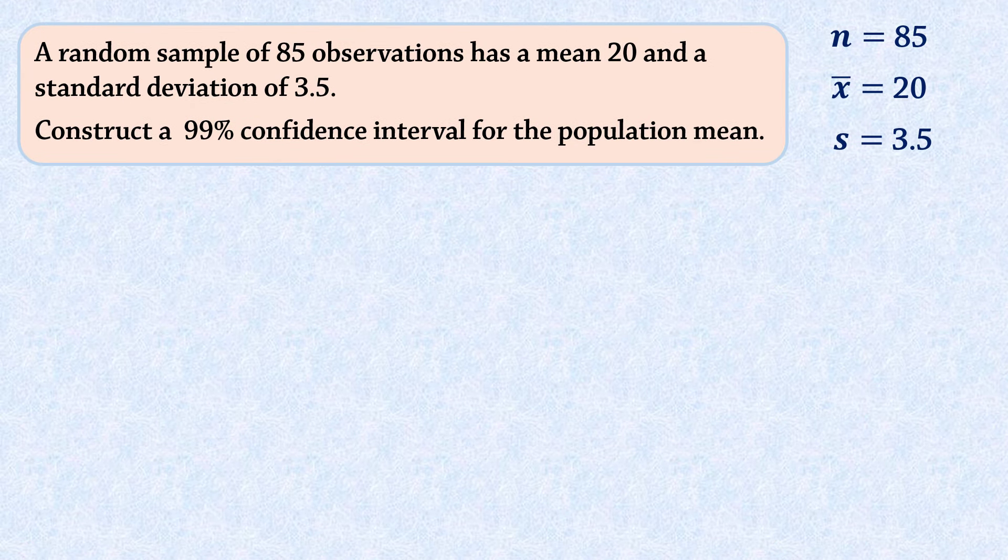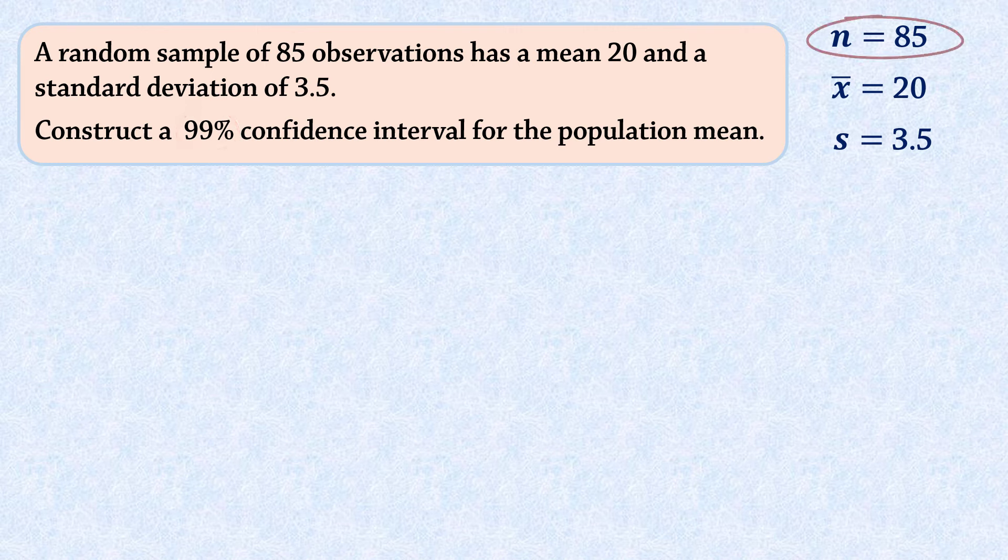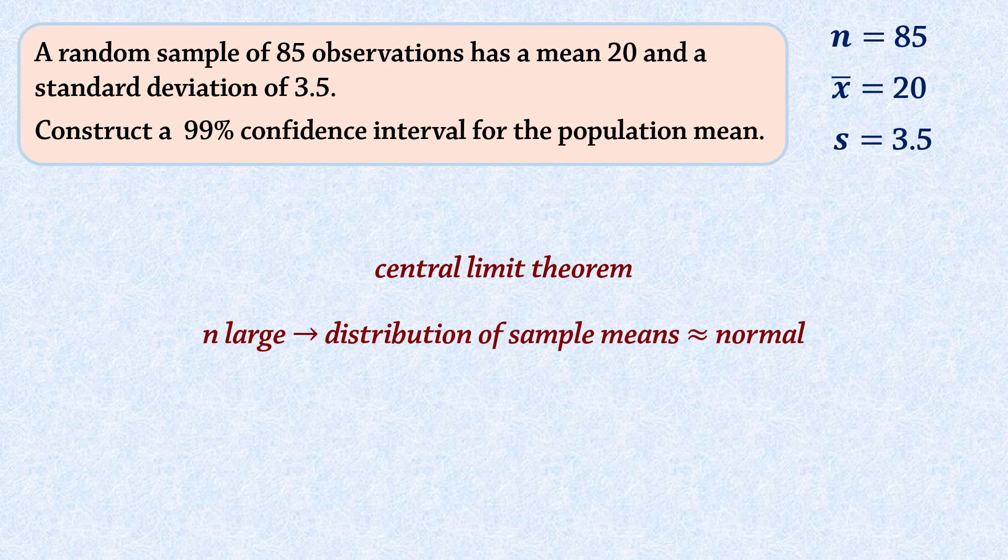Let's look at another example. Here, the sample size is increased to 85, and we want to construct a 99% confidence interval for the population mean. The sample size 85 here is considered large because it is larger than 30. Therefore, according to the central limit theorem, the distribution of sample means will be approximately normal for a sample size this large and the assumption of normal population is unnecessary.